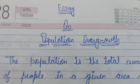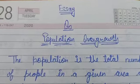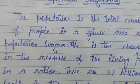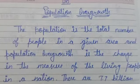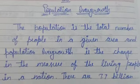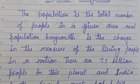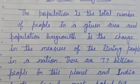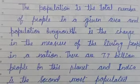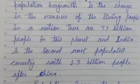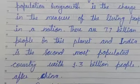Hello friends, today we will see an essay on population overgrowth. The population is the total number of people in a given area, and population overgrowth is the change in the number of living people in our nation. There are 7.7 billion people on this planet.